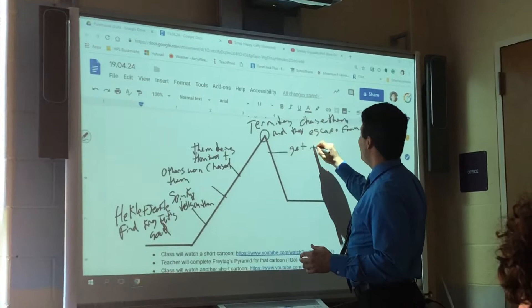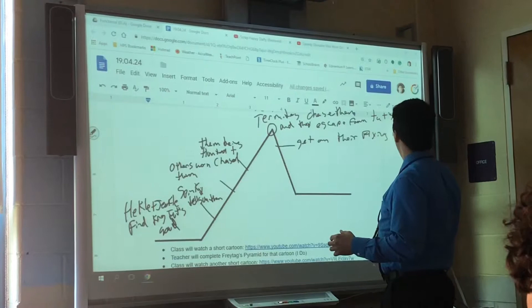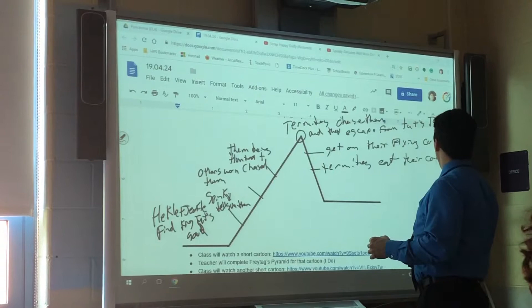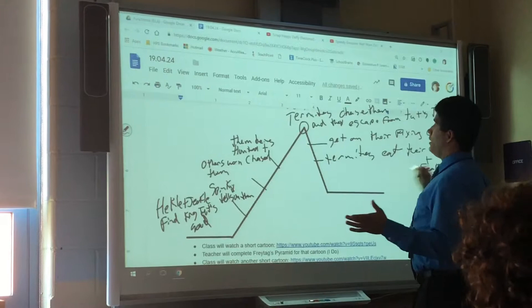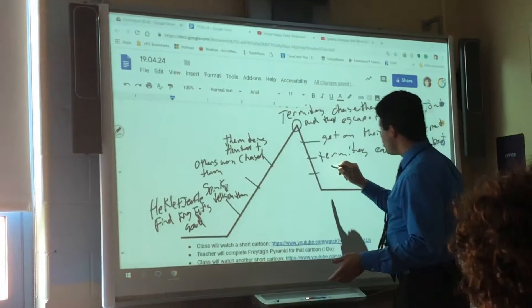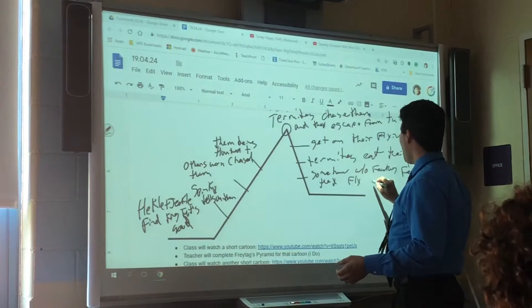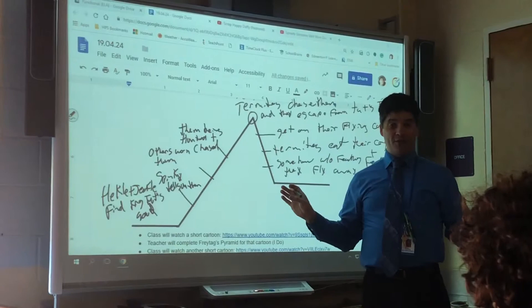The falling action is get on their flying carpet, termites. Termites eat their carpet and feathers. Somehow, and I like your reaction, what? They can't do that. Somehow, how, without feathers, they fly away. Okay?